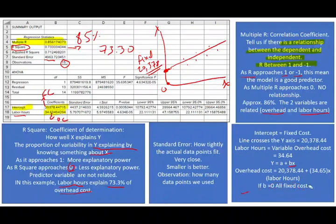Let's assume b equals zero. If b equals zero, it means we have no variable cost — that means all the cost is fixed. Because if you have no variable cost and you multiply x by zero, you still get zero, meaning all cost is fixed.